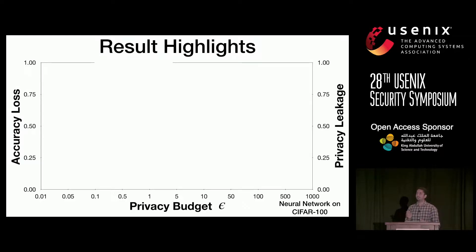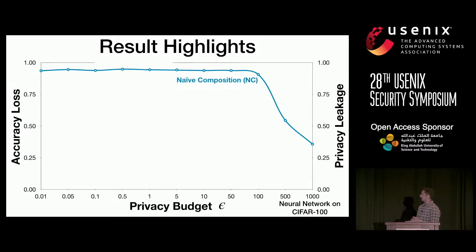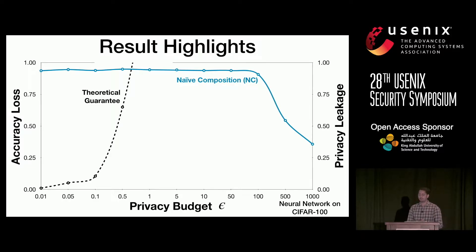We know that we can tune the differential privacy parameter epsilon for an acceptable utility-privacy tradeoff. Here we train a neural network model for the CIFAR-100 dataset, which is a 100-class classification task, and we see that until an epsilon value of 100 we don't get any model utility, and beyond that the model starts to learn something useful. But from the definition of differential privacy, the theoretical upper bound on privacy leakage is guaranteed only for epsilon between 0 and 1. In this range, there doesn't seem to be any useful learning going on.